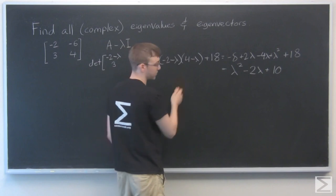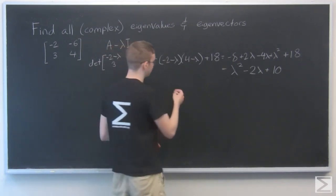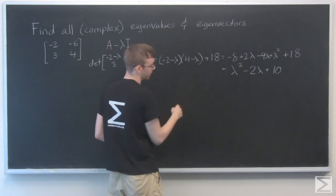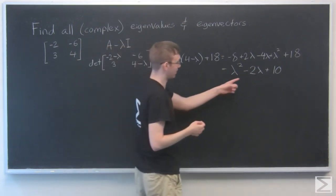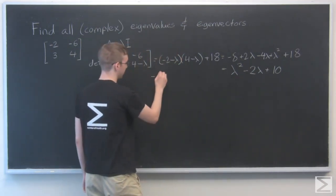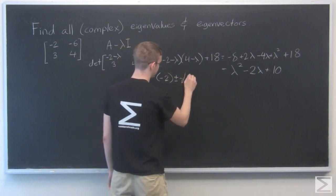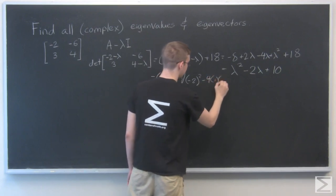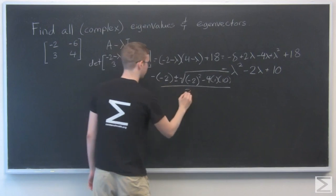So we have negative b plus or minus the square root of b squared minus 4ac all over 2a. It's easier to remember than it is to say. But we're going to take this. We're going to have negative b plus or minus the square root of b squared minus 4ac all over 2a.